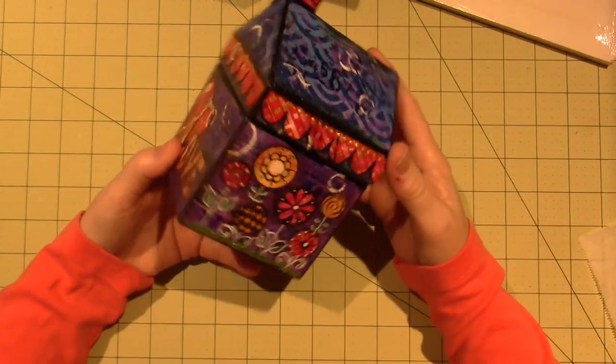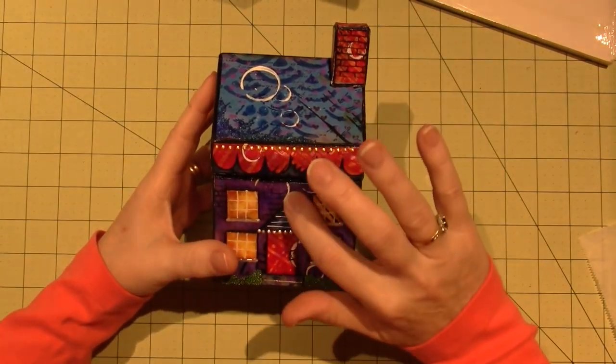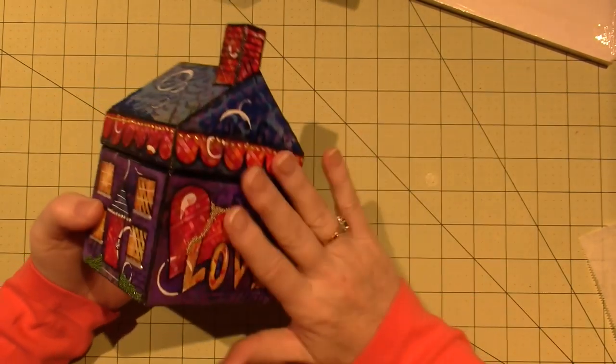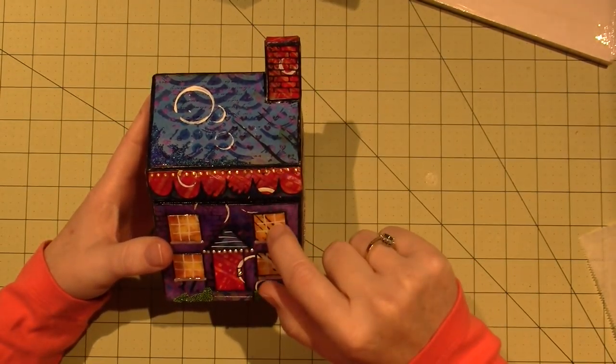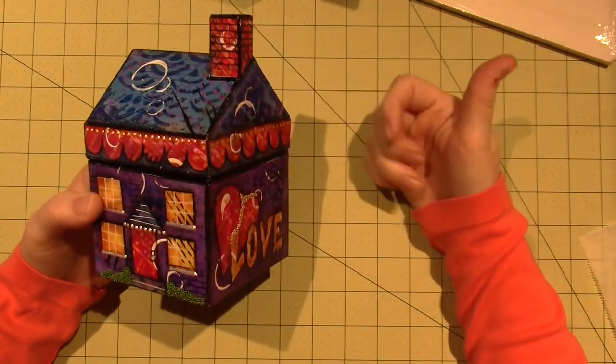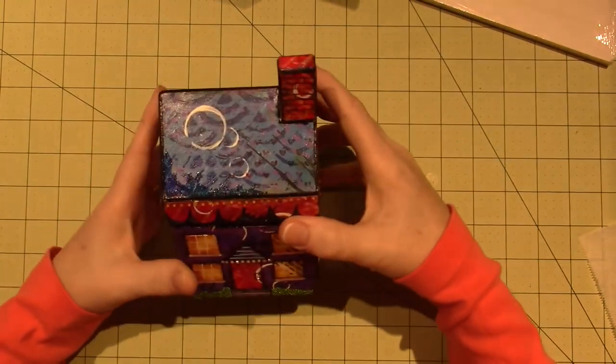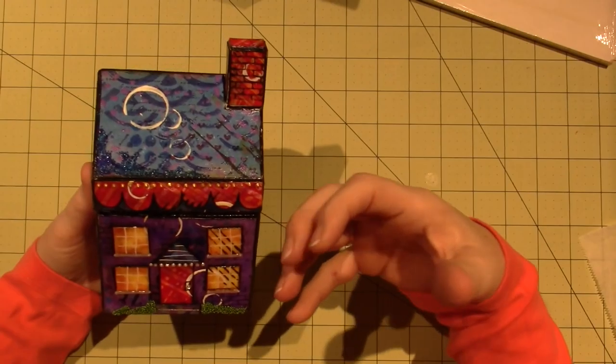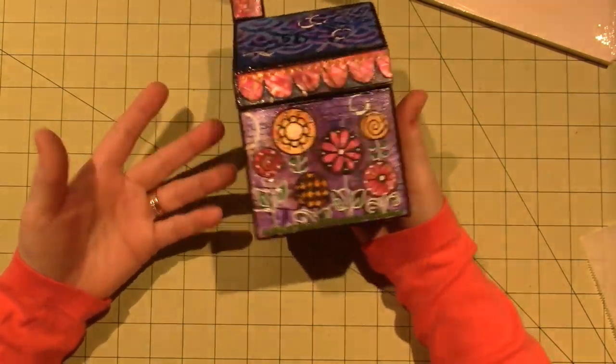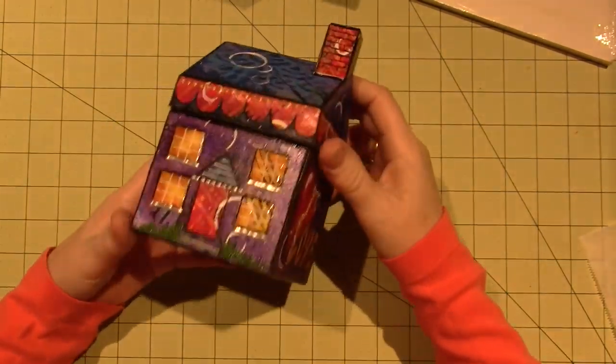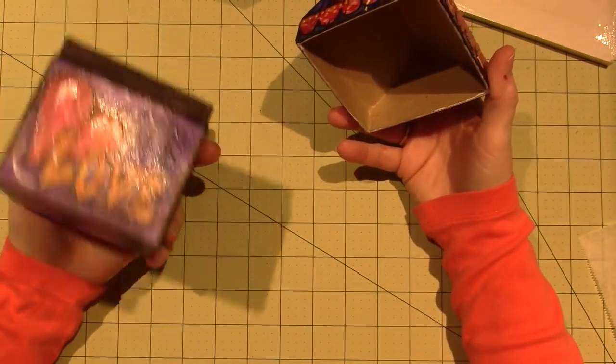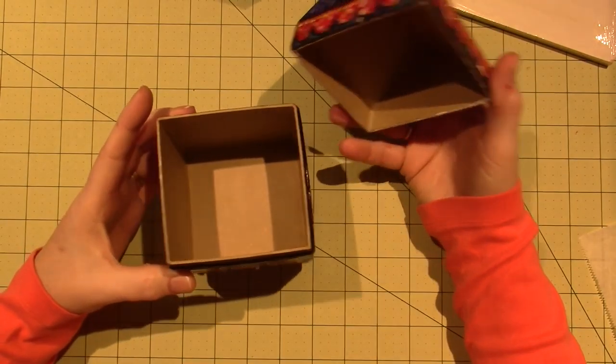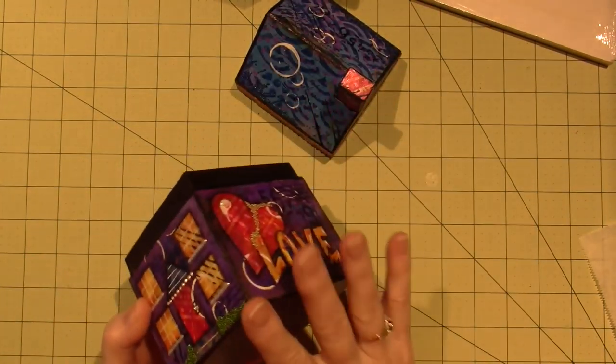So yesterday, I basically used, I think, four colors. Blue, purple. This is all done with a jelly print. Blue, purple, yellow, and red. That's basically it. And I don't know if I should have used the darker colors the way I did, but it is what it is. You know me, I like bright, dark colors. So let me start.